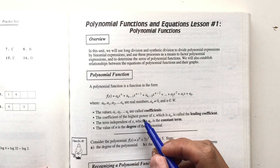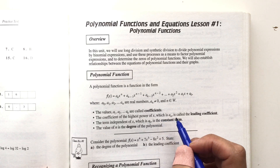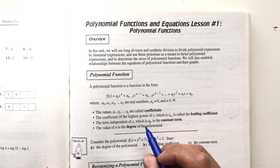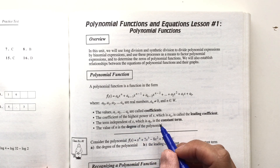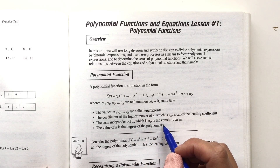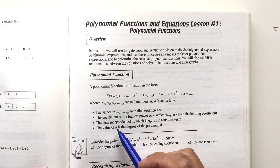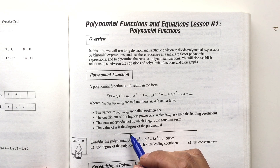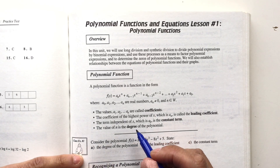We also have the highest power of the polynomial function of x, and the coefficient attached to that highest power is called the leading coefficient. We also have the independent term which does not have a variable on it — this is known as the constant term. So if you just have a value like 5, that would be the constant term. Finally, the degree of the polynomial is the highest exponent on the polynomial function.